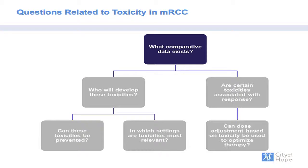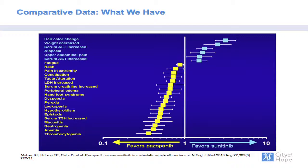The first question is: what comparative data exists? In the context of clinically relevant decisions, we really have one trial that addresses this — the COMPARZ trial. Patients were randomized to receive either sunitinib or pazopanib therapy. There were several toxicities — for instance, hepatotoxicity — that favored sunitinib, and several toxicities such as fatigue and hand-foot syndrome that favored pazopanib therapy.